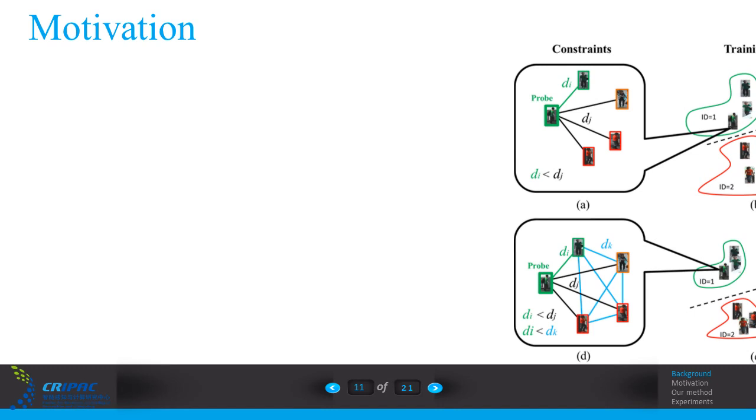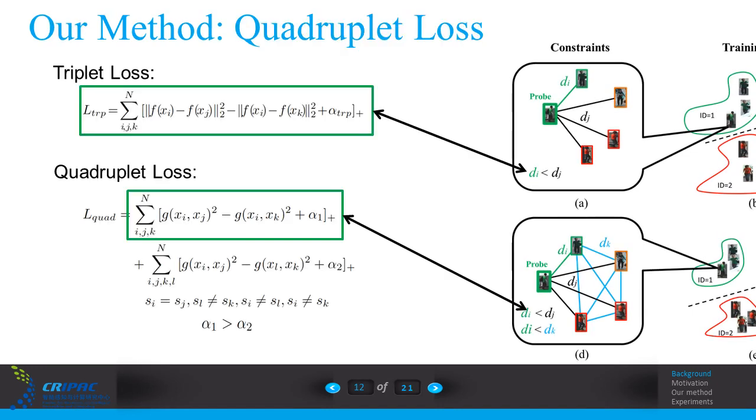Based on this, we built a quadruplet loss that adds the extra constraint, the blue D, to the original triplet loss.